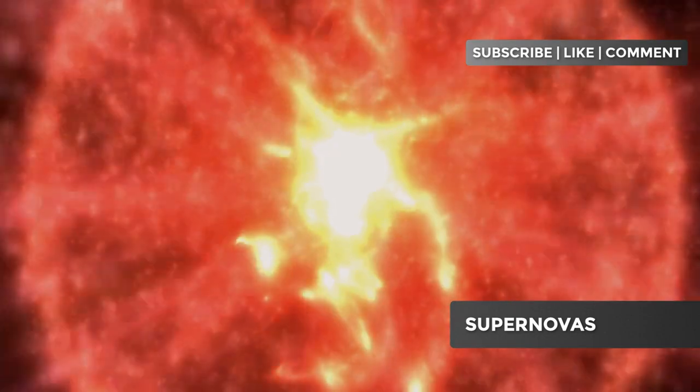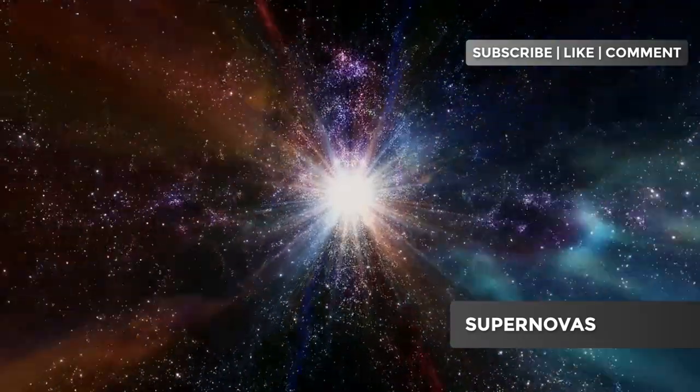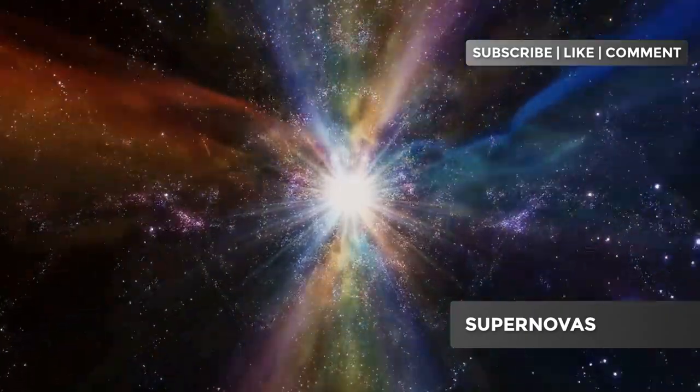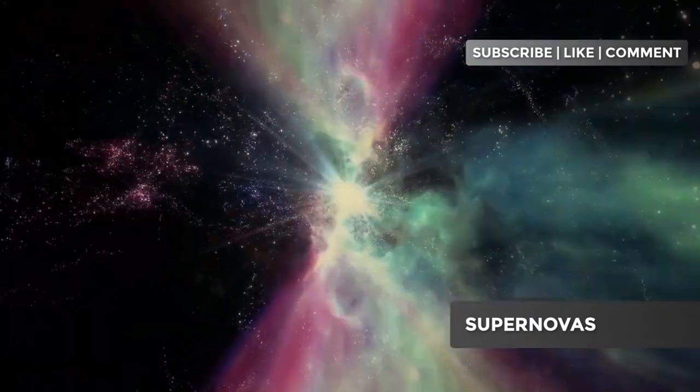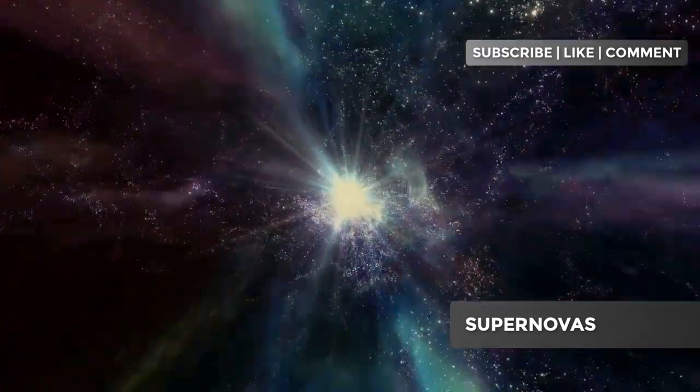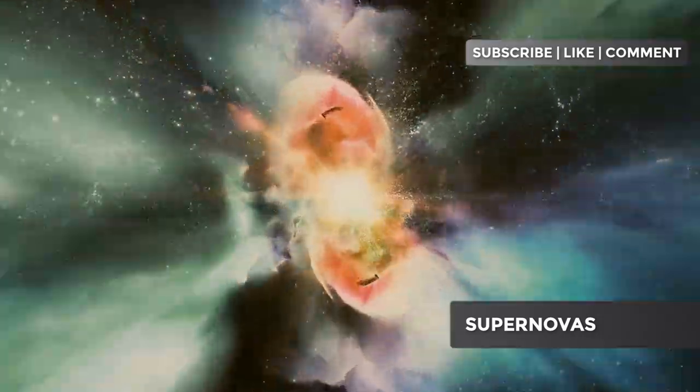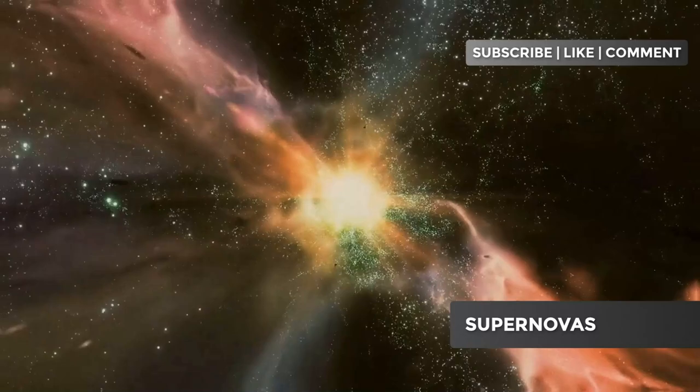First, we need to understand what a supernova is. Simply put, a supernova is an extremely powerful explosion that occurs at the end of a star's life cycle. There are several types of supernovas, each occurring in unique ways and involving different physical processes. We will explore these types in detail in the following chapters.